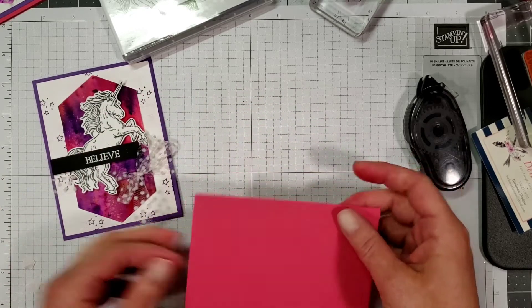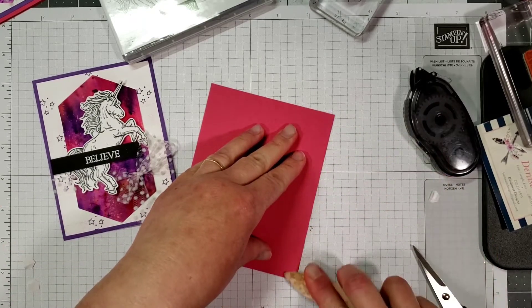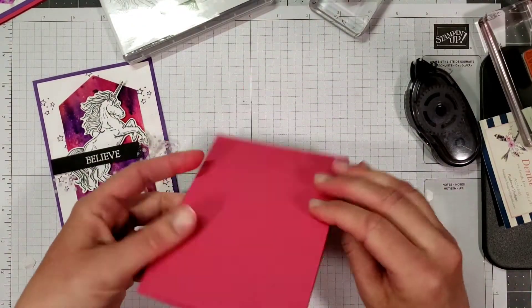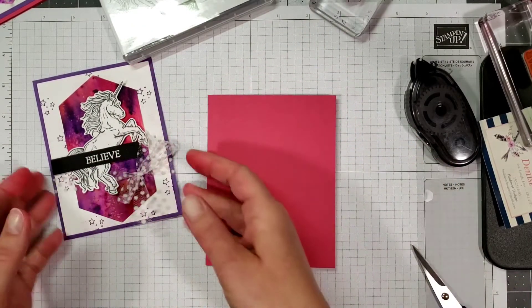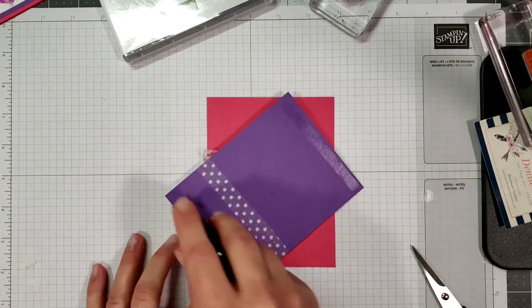Which I've already pre-scored here, I'm just going to run my bone folder along it to make sure it's a nice crisp fold. And then I'm going to adhere that to the front of the card.